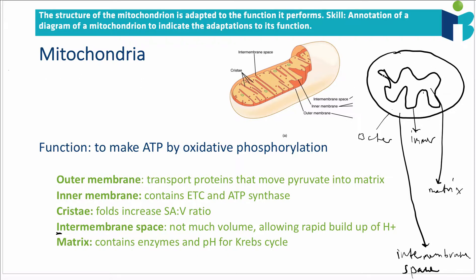The outer membrane is protecting the mitochondrion from the rest of the cell — this is compartmentalization, which we discussed when talking about eukaryotes versus prokaryotes. We need to section off parts of the cell, and the outer membrane is responsible for that, maintaining conditions inside the mitochondria. It also creates, together with the inner membrane, the intermembrane space.